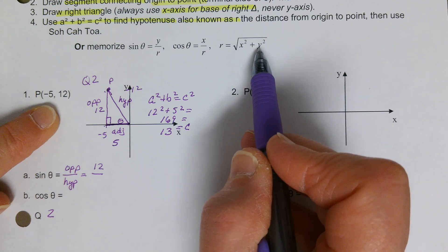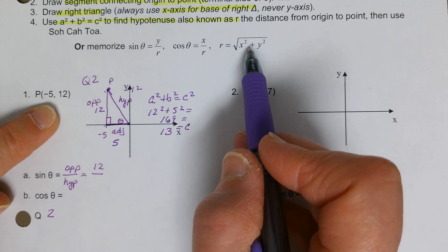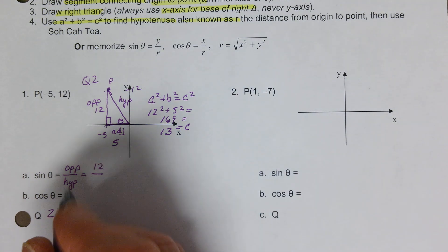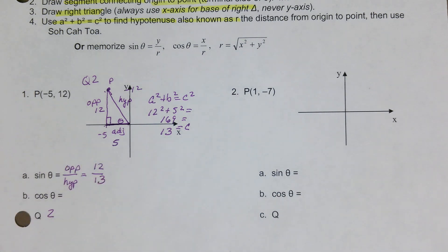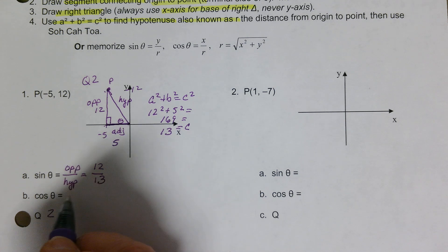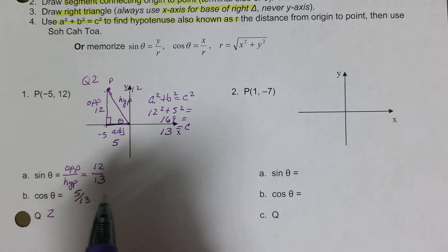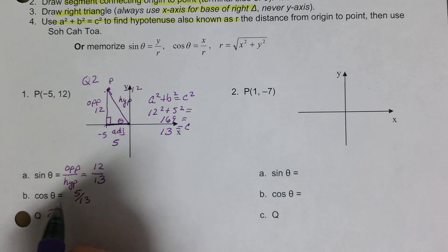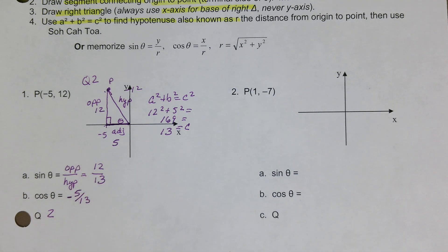So the sine of theta is 12/13. The cosine of theta is adjacent over hypotenuse — 5/13. But remember, we are in quadrant two where cosine is negative, so don't forget the negative sign: cosine = −5/13.